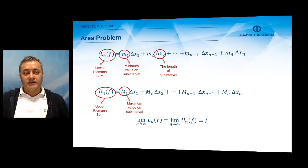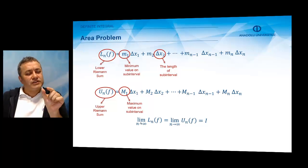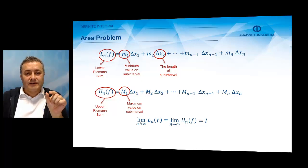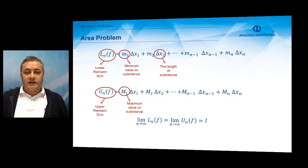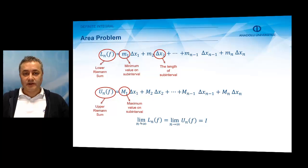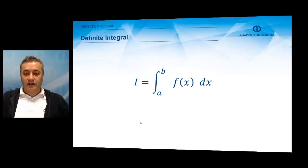How do we get the actual area of region R? If we increase the number of points we choose in this interval, we decrease the sizes of the bases, so the rectangles become very, very small. In the end — the case when the limit as n tends to infinity — we get the actual area. The limit of the lower Riemann sum and the limit of the upper Riemann sum, if they exist, will be equal to a number I, which is called the definite integral of the function f of x.